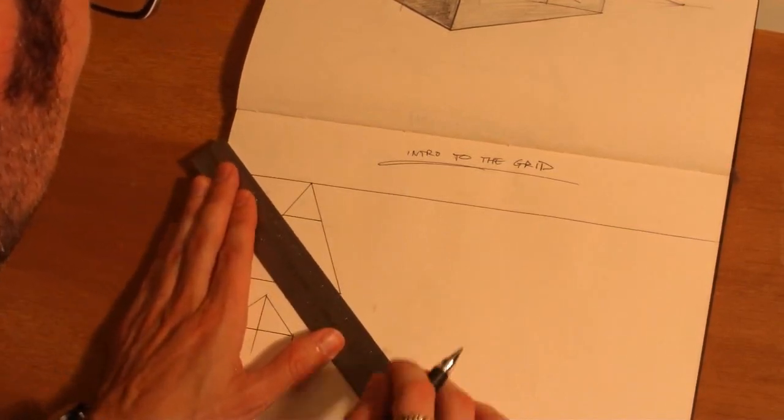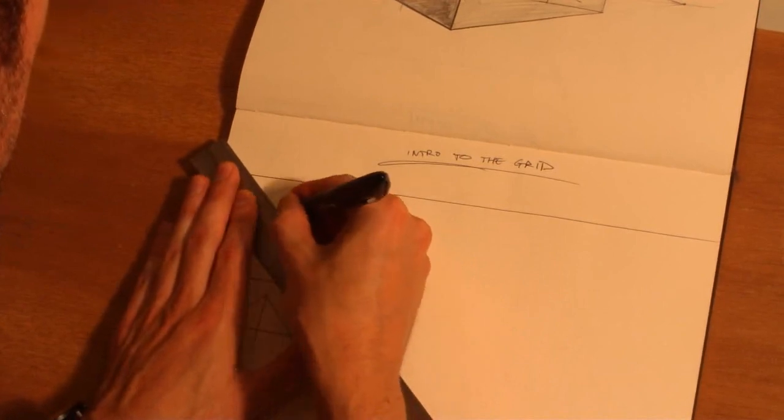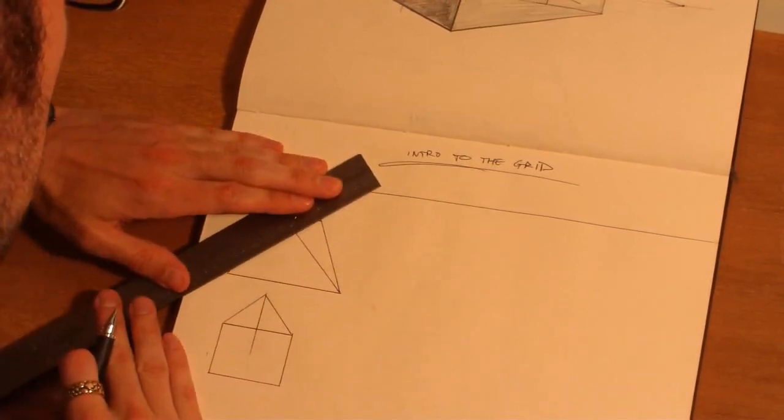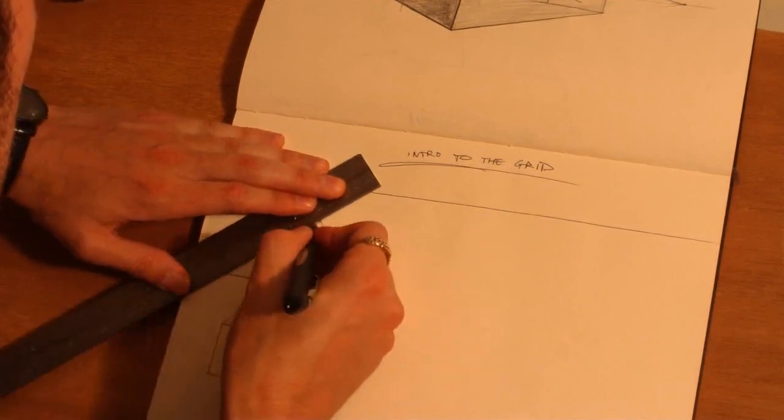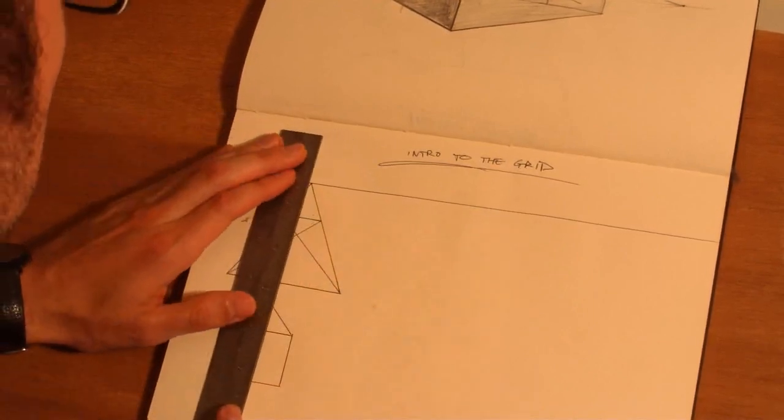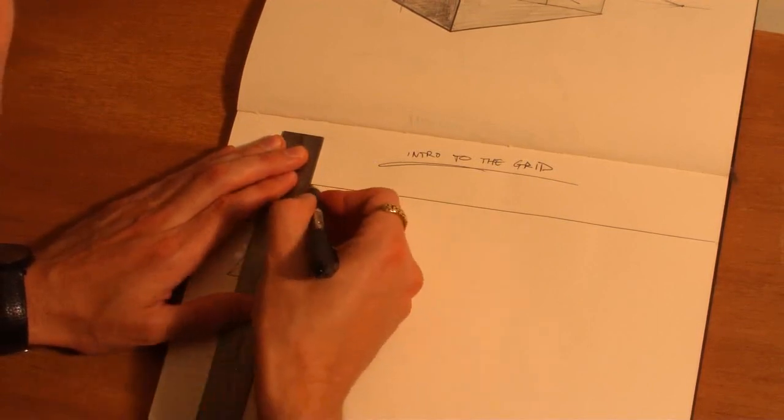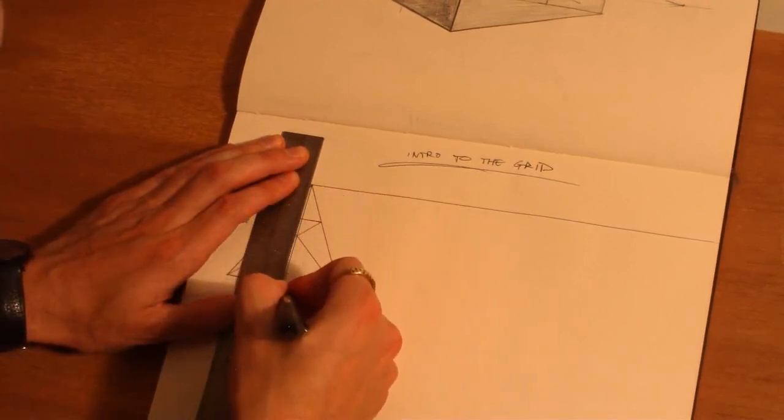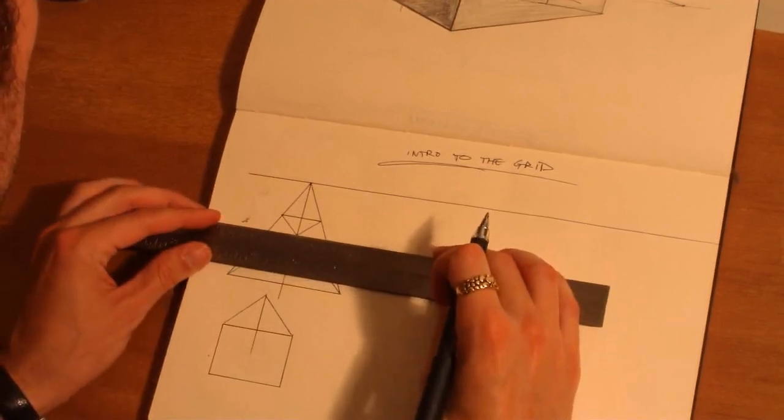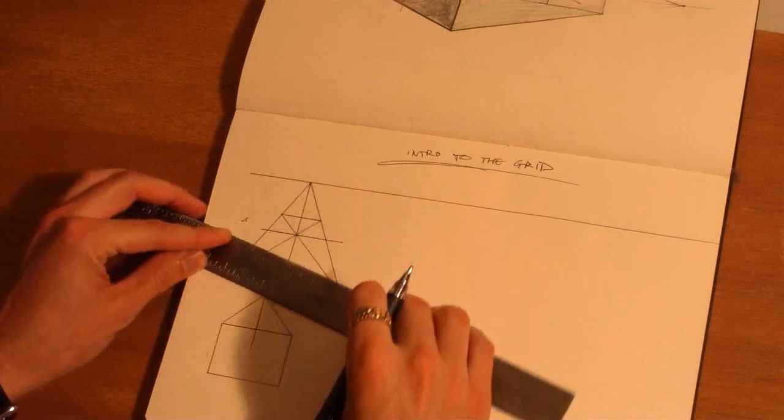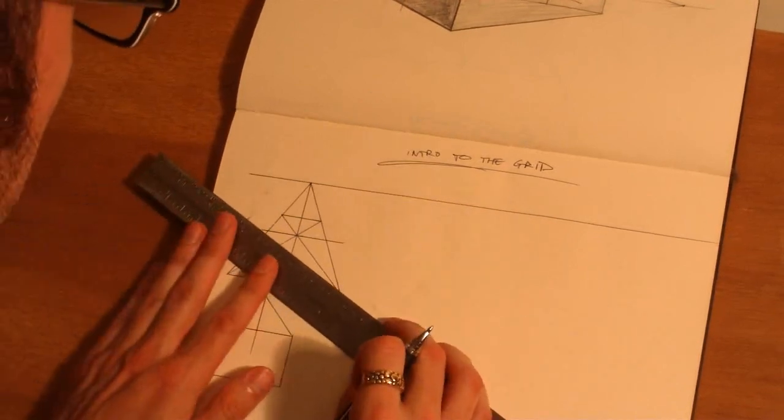So, we're going to find our centers. And your grid can be as detailed or as not detailed as you want. And we're going to do both our horizontal and vertical centers. We're just going to try to keep these lines parallel. The more careful you are setting up your grid, the better off you're going to be.